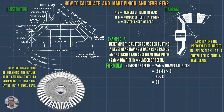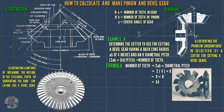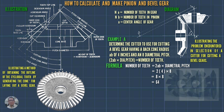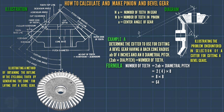By referring to the list of standard cutters, we can select cutter number 2, because the number of teeth, 64, falls within the range of 55 to 134 of the standard number 2 cutter.